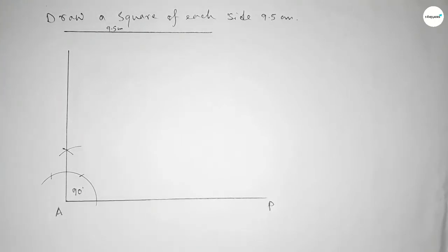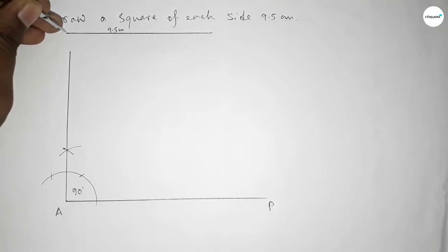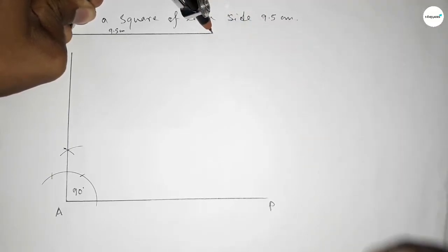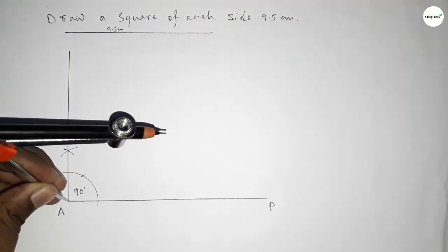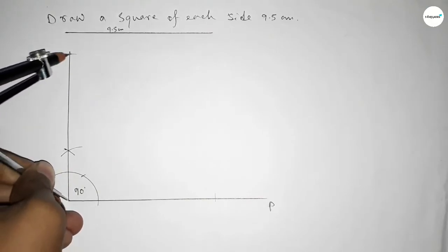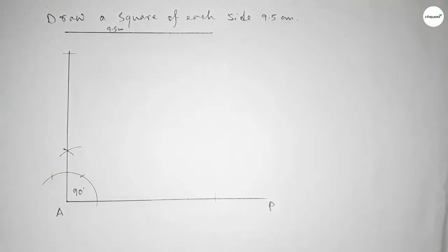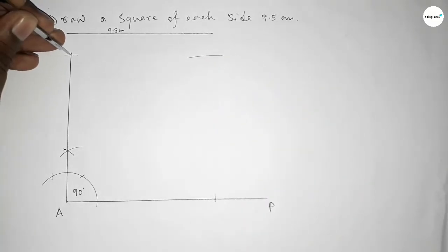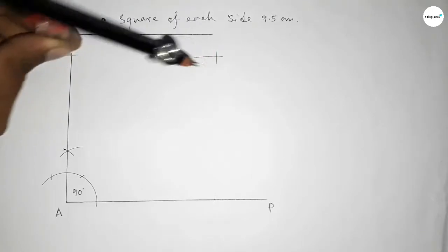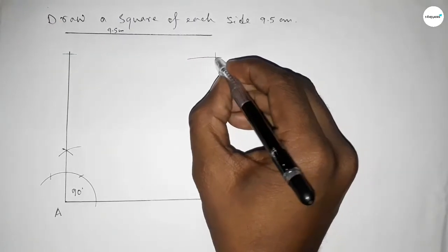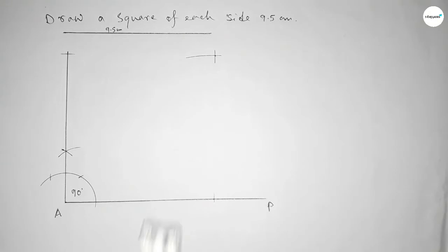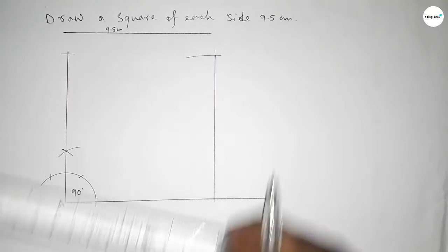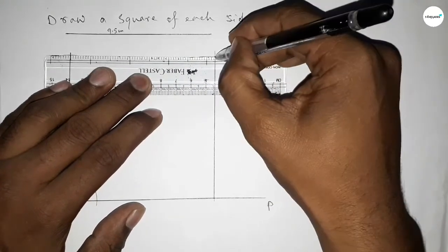Now taking the length 9.5 centimeters using the compass. Putting the compass on point A and cutting marks. With the same length, putting the compass at the next point and drawing an arc, then cutting so both curves intersect at a point. Now joining this side, then joining this side to get the square.